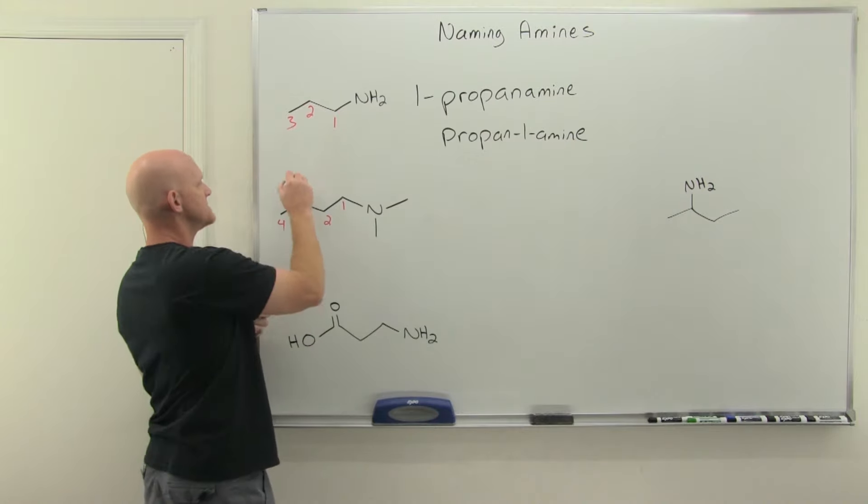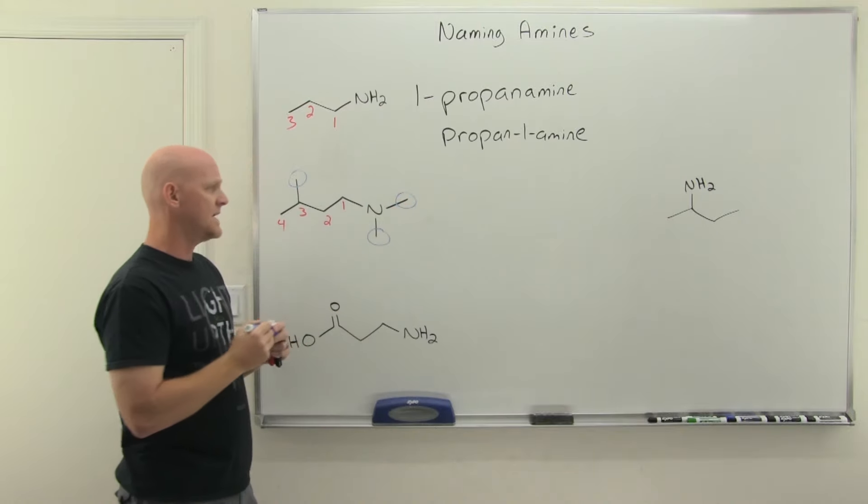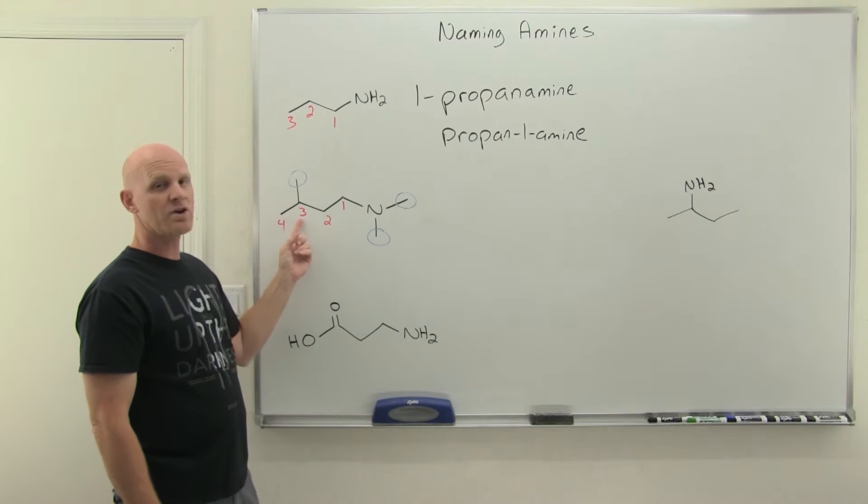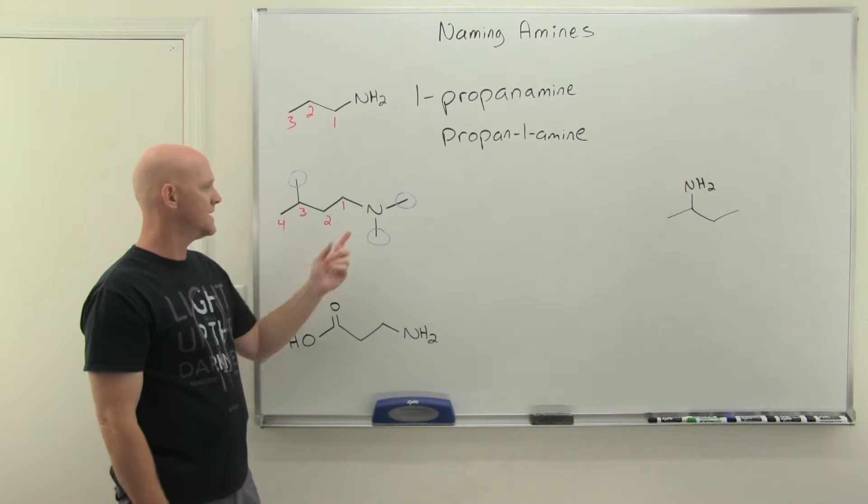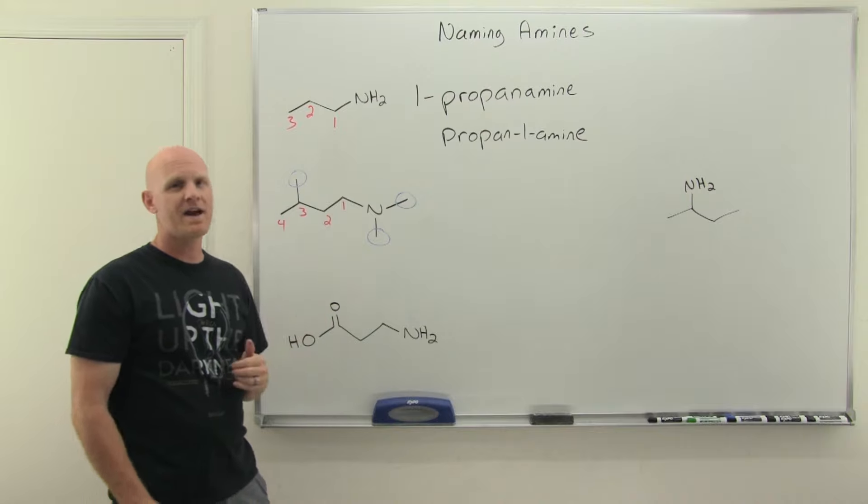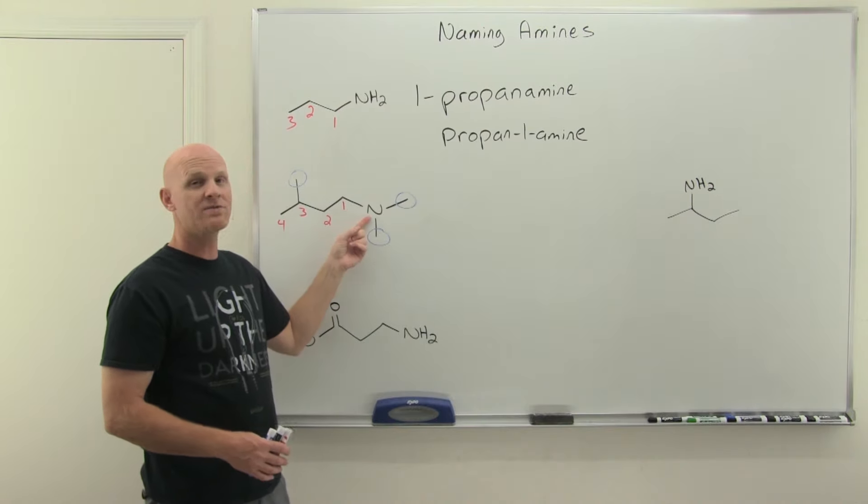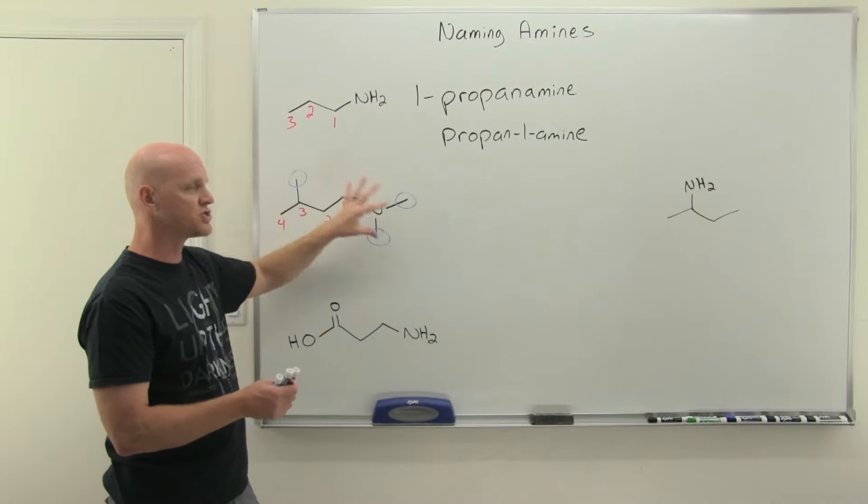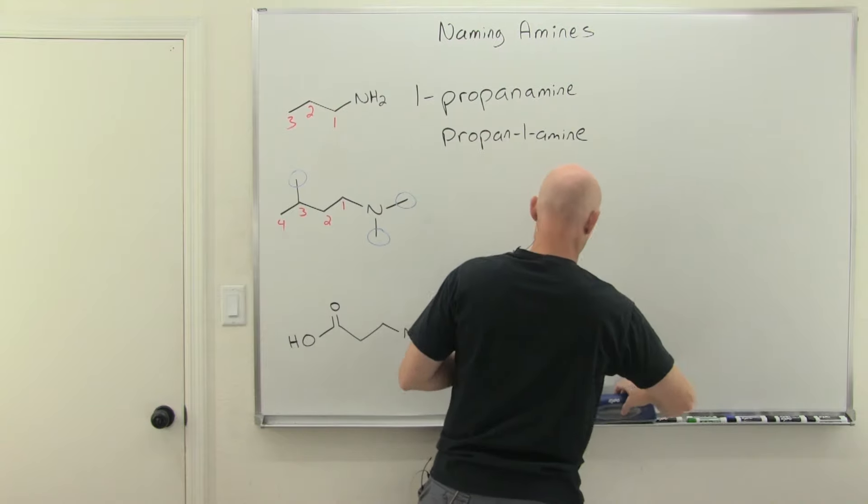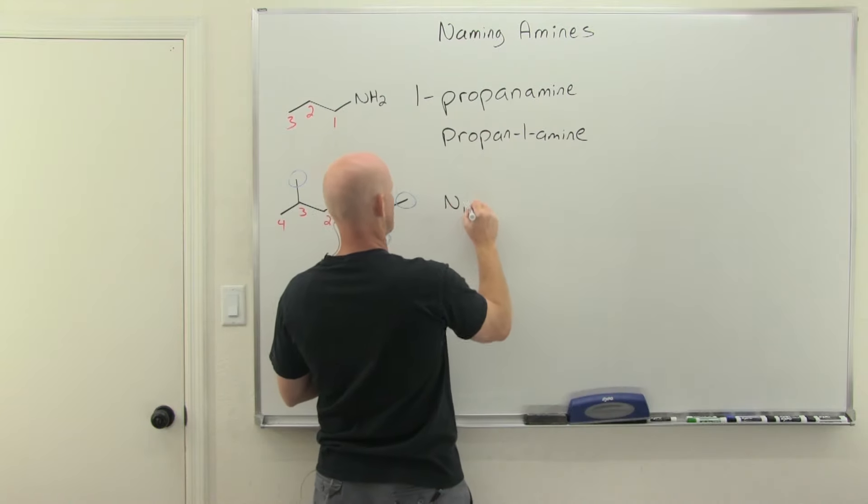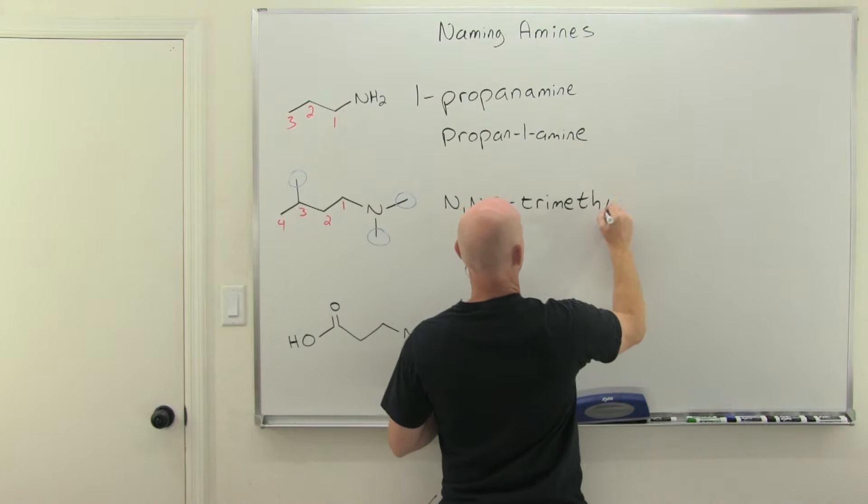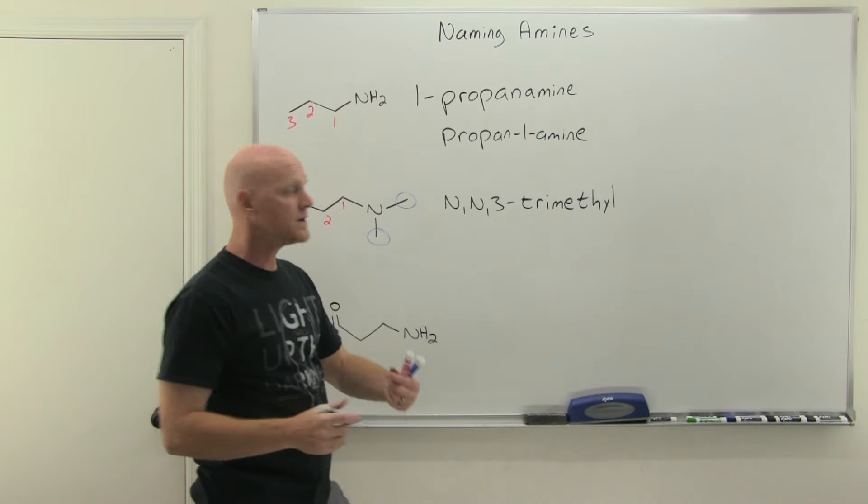But then we've also got some substituents here. We've got three methyl groups, so we're going to say trimethyl. This one's obviously located at chain locator three, so 3-methyl. But these aren't located on a carbon at all, so we can't give a carbon number. They're located on the nitrogen. Just like we saw with amides, they're going to be listed with a chain locator of capital N. When you've got some mixture here with N's and threes, it's customary to put the N's first. Our substituents are going to be named as N,N,3-trimethyl.